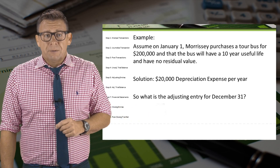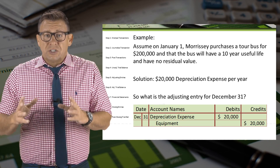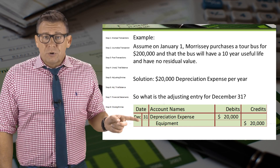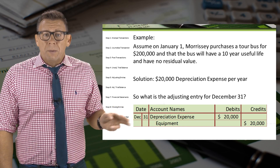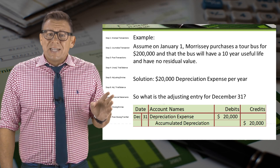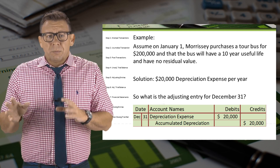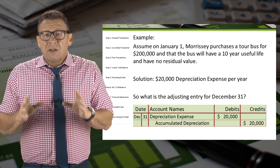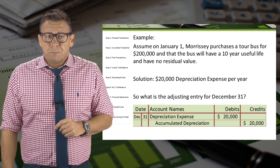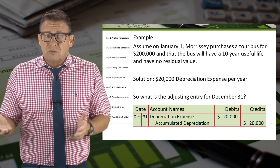So let's make the adjusting entry. Following the same pattern as our other deferral adjusting journal entries, we might assume it is a debit to depreciation expense and a credit to equipment for $20,000. But that is not correct for tangible assets with long lives. A long-term tangible asset like equipment still physically exists after it's been fully depreciated. This is different than supplies, which do not exist once they've been fully used up.